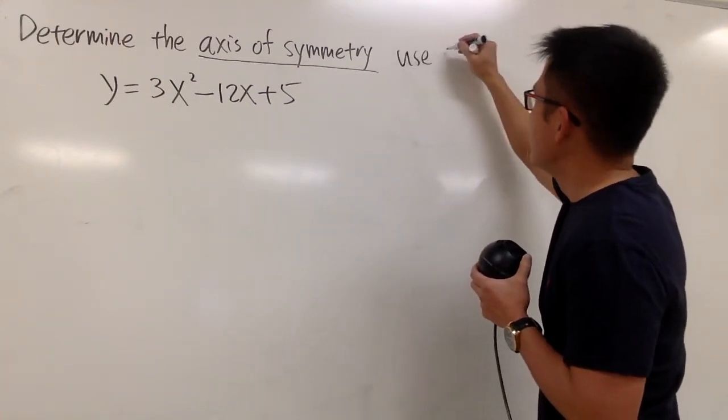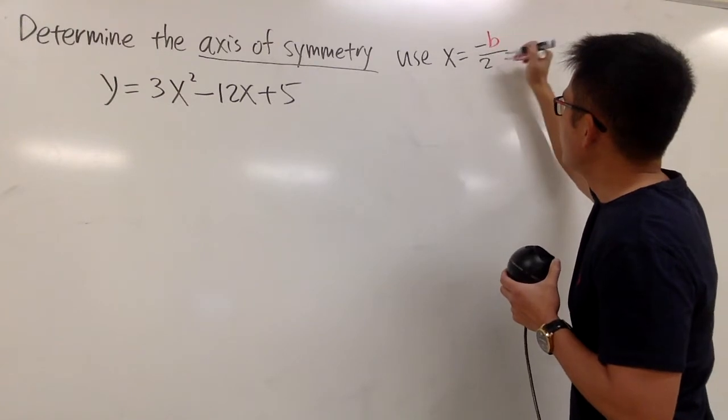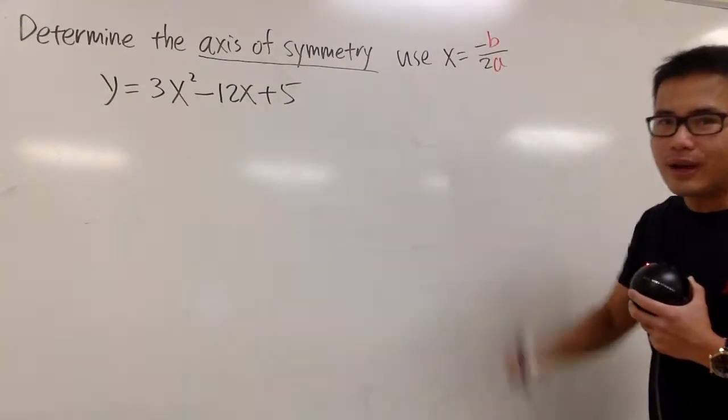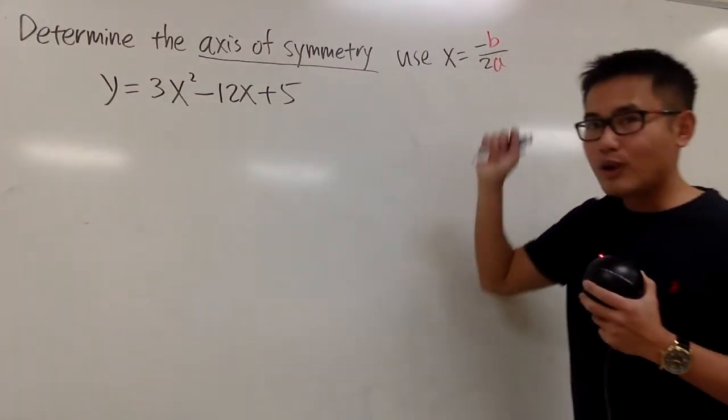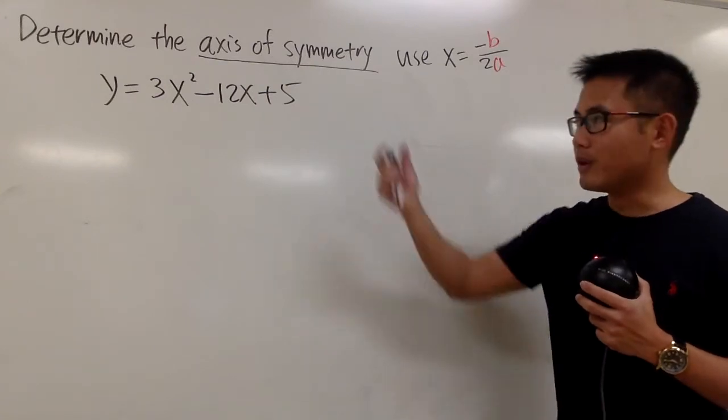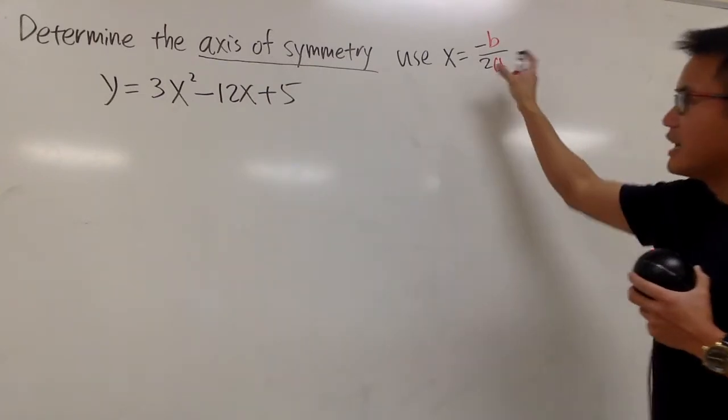We just have to use x is equal to negative b over 2a. That's the idea, okay? And this is also the vertex formula for the parabola. This will give you the x value for the vertex.